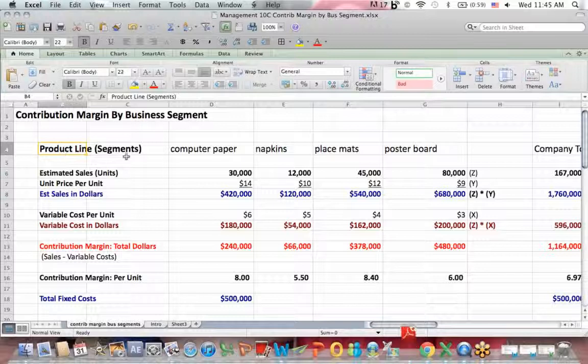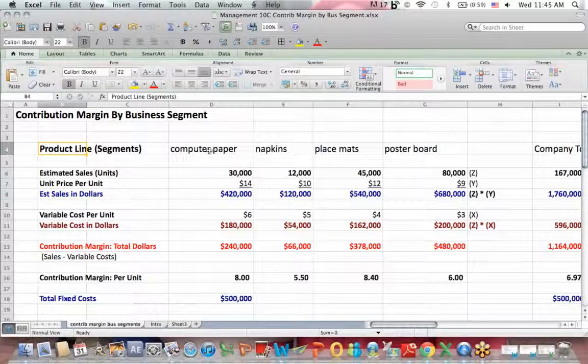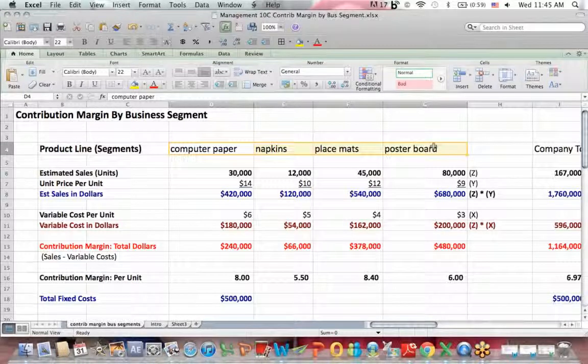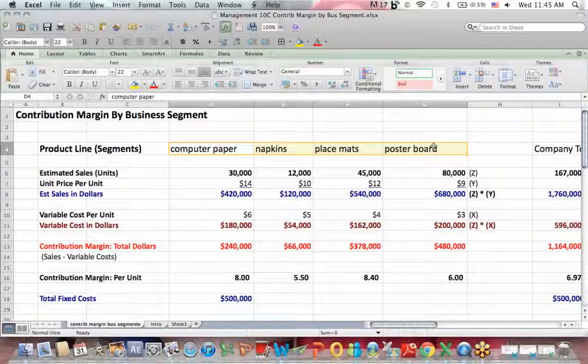What I have across the top is the product lines with the segments. Here are the four segments. They're all related to the paper industry: computer paper, napkins, placemats, poster board.